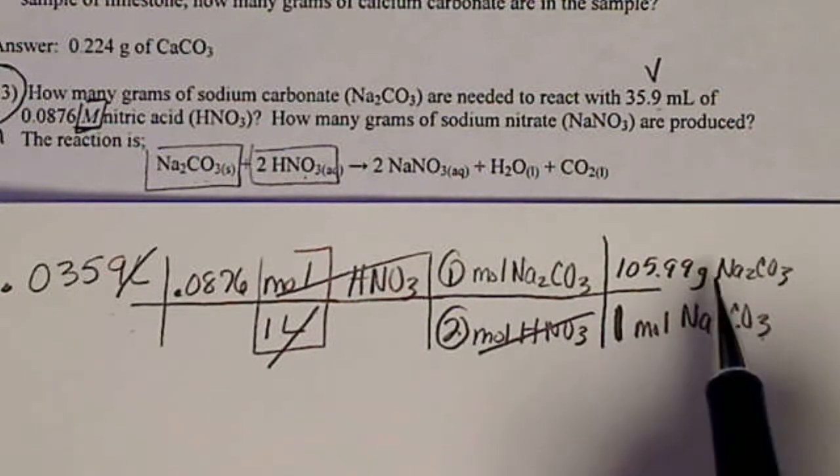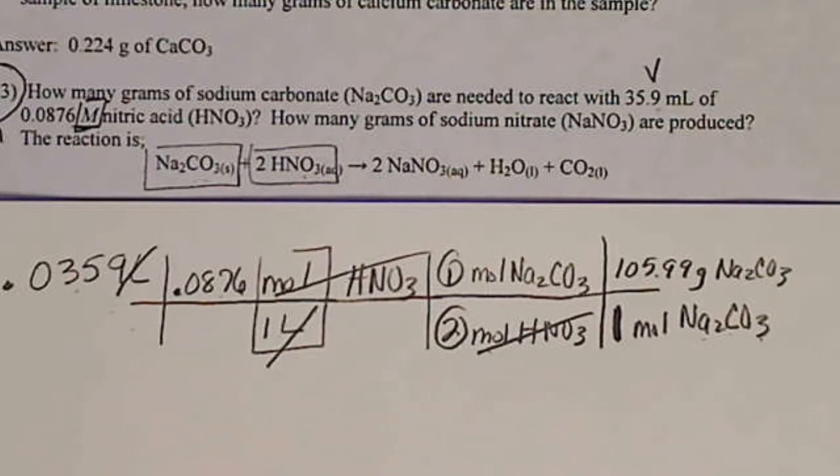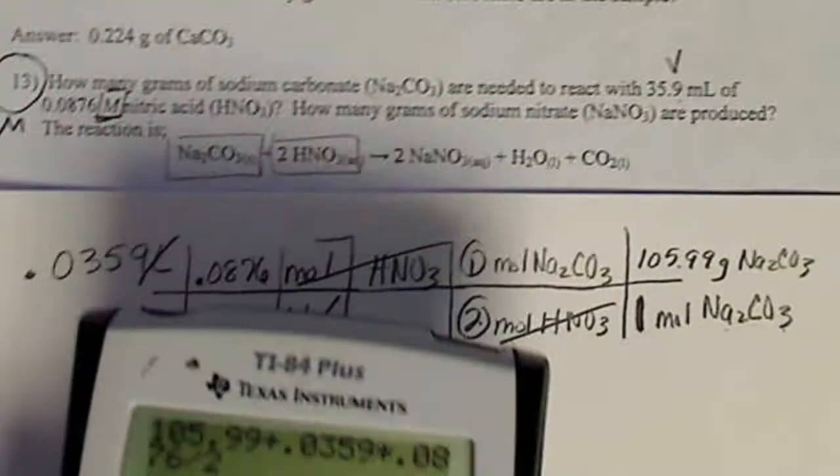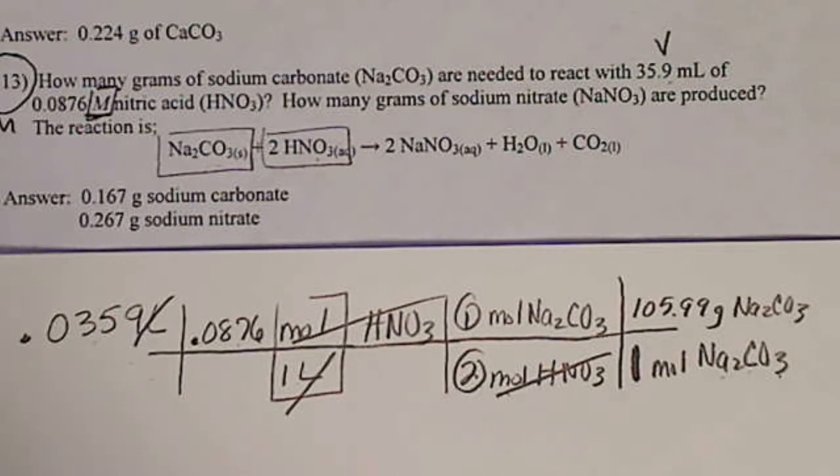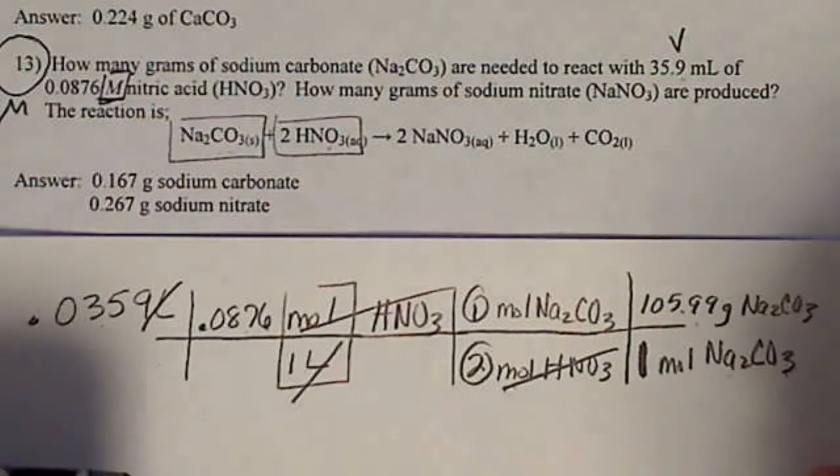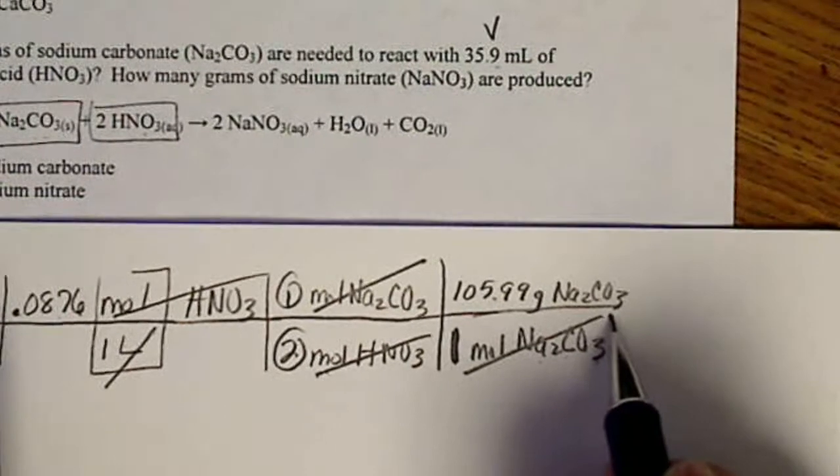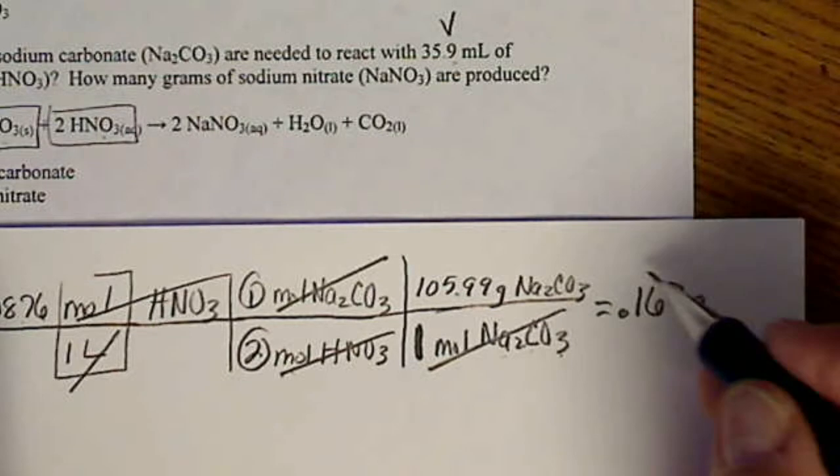So that number is already in my calculator. I'm going to divide by 2, multiply by 0.0876, and multiply by this number. I'm going to put the 105.99 divided by 2 times 0.0876 times 0.0359. So half of the problem, we're just getting all that entered in the calculator correctly. And we do that, and everything cancels except for grams. So that's exactly what we're looking for, 0.167 grams of Na2CO3.